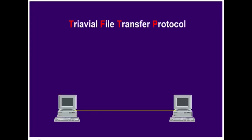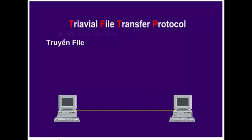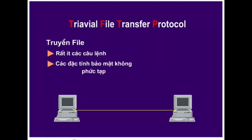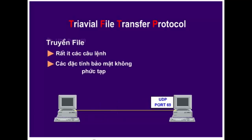TFTP là giao thức truyền tệp, chỉ hỗ trợ một vài câu lệnh và các cơ chế bảo mật đơn giản. Nhưng TFTP lại cho phép truyền dữ liệu nhanh, nó sử dụng cổng UDP-69. TFTP chỉ có 5 chức năng chính.